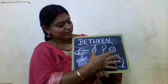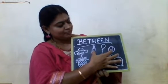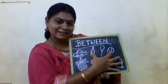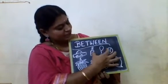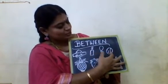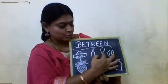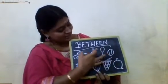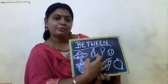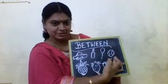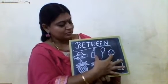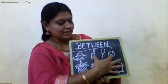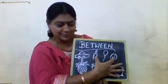In the same way, we can see what is there between bat and the ball. Between the bat and ball, there is a balloon. So between means it has something before it and something after it. So there is a balloon between bat and ball.